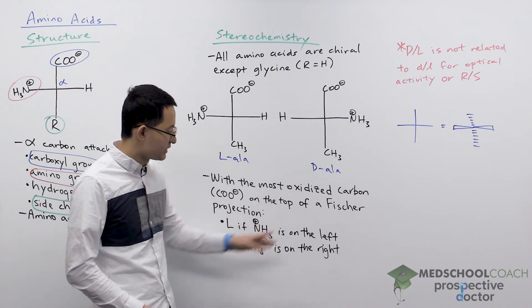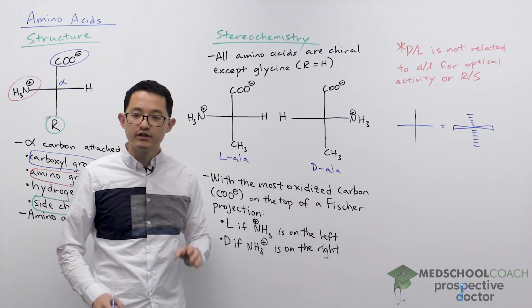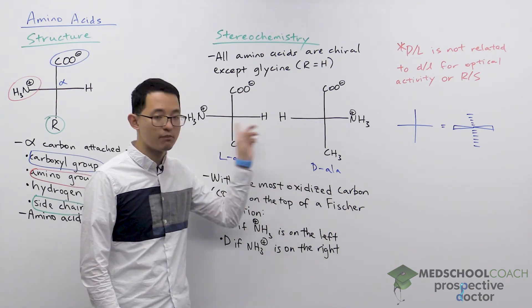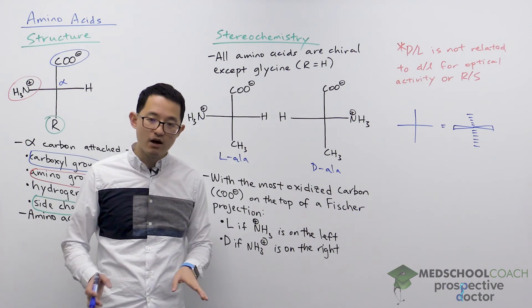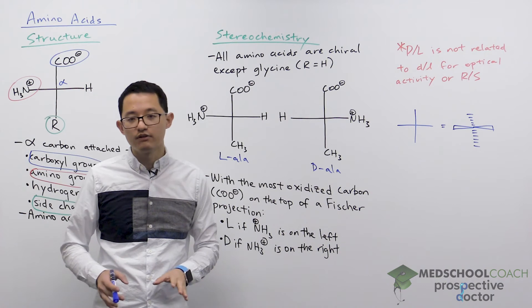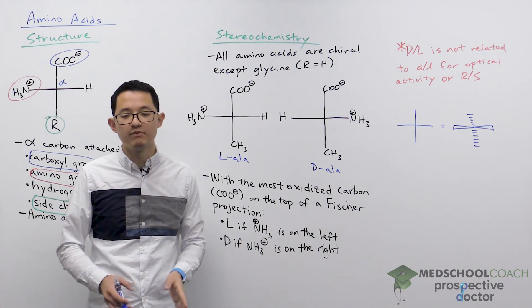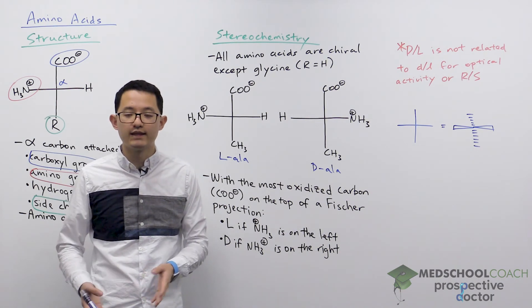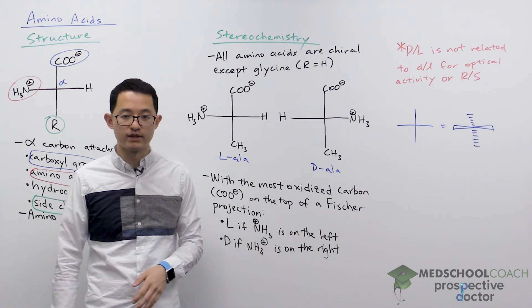And one way you can tell this is because capital D and capital L you can determine by looking at the structure of the molecule alone. That's not possible with lowercase d and lowercase l. Those can only be determined experimentally by measuring the way that your sample rotates plane polarized light.